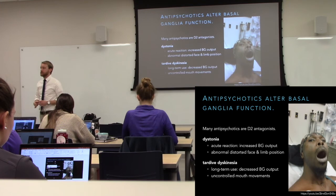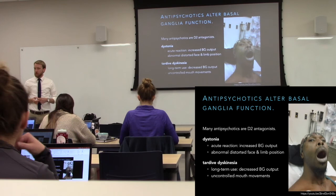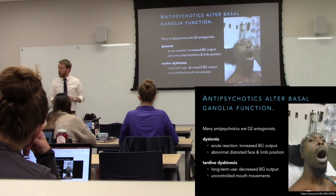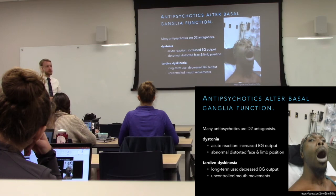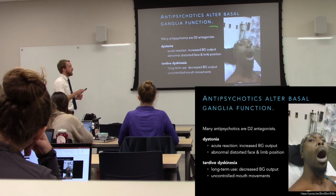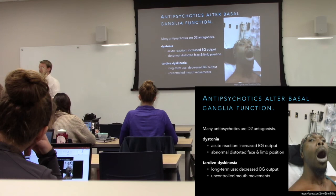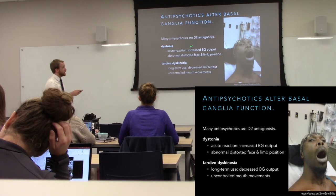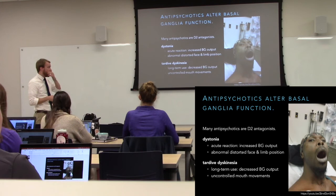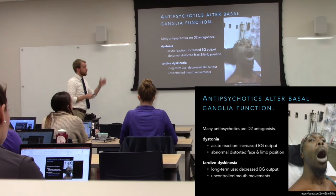You'll sometimes see motor deficits with antipsychotic use — it likely has to do with the effect on basal ganglia function. Remember, dopamine is one of those switches that determines are we biased toward direct or indirect pathway output. Antipsychotics, while they hit a variety of dopamine receptors, for the most part we're talking D2 antagonists. You'll see a couple of different things depending on whether we're talking about acute doses or long-term use — what's the effect of the drug and what's the effect of homeostasis.